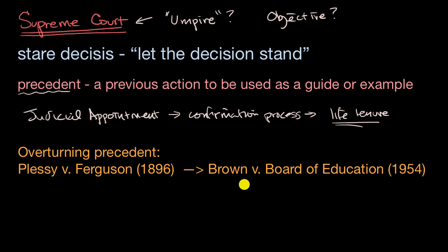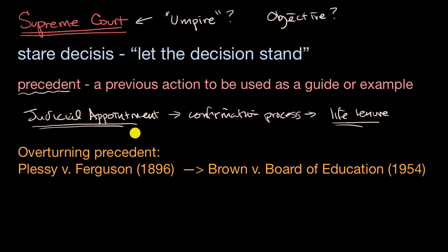What's interesting is that even though presidents try to appoint people who they believe would vote similarly to them or share their views, it doesn't always work that way. For example, President Eisenhower, who was a Republican, appointed Justice Earl Warren, who was a Republican governor of California. But Warren ended up being famous for taking more liberal stances, including on Brown versus Board of Education.